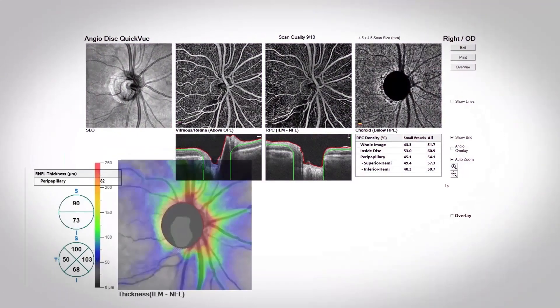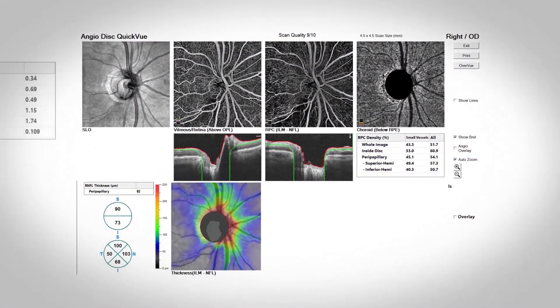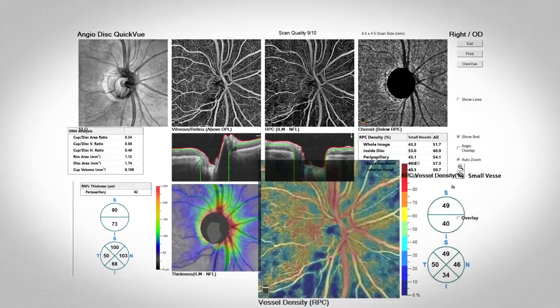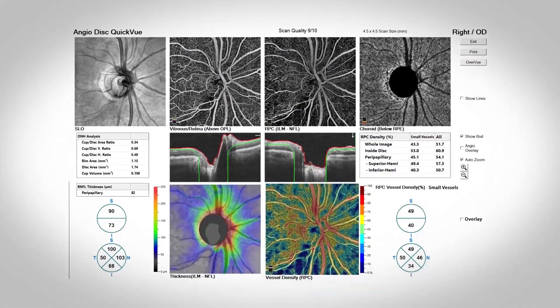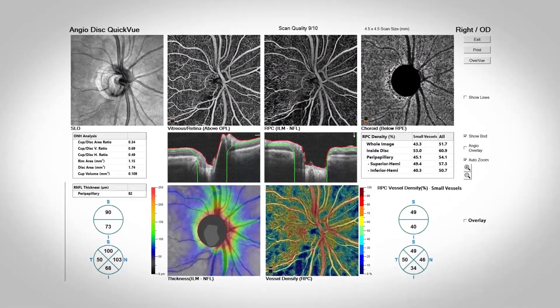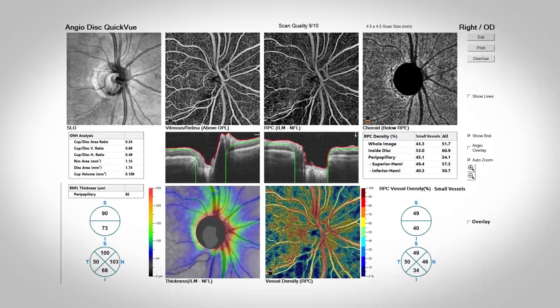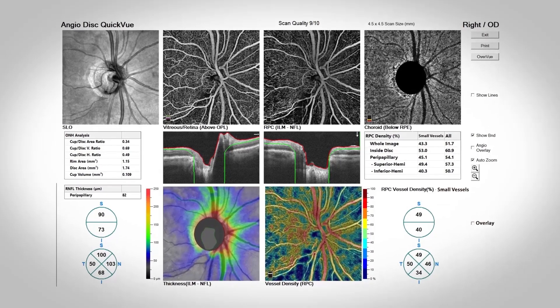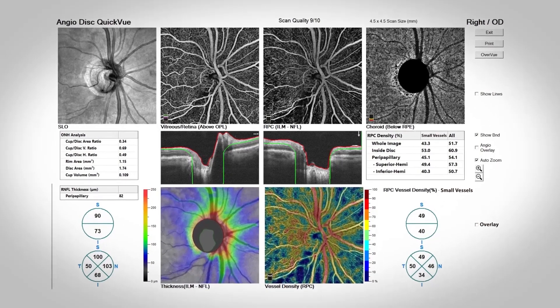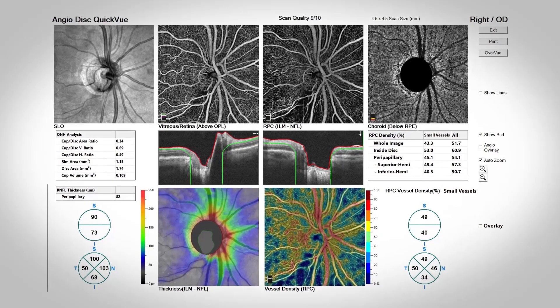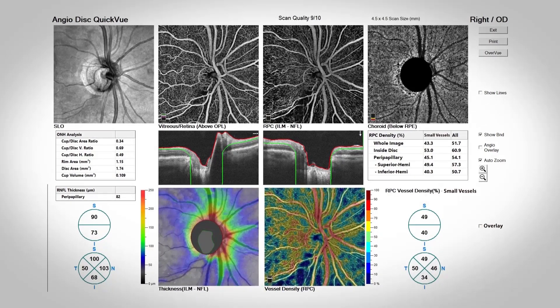The Disc QuickView report shows an RNFL thickness map, disc parameters, and an RPC vessel density map to enable direct comparison of structure and vasculature.